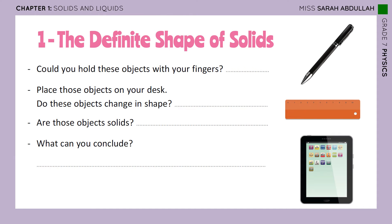If you have the book, you can open it to page six. We have three items: a pen, a ruler, and a tablet. Could you hold these objects with your fingers? Can you hold your pen, your ruler, or even the tablet you're watching this video on right now? Yes, you can. We can hold these with our fingers.